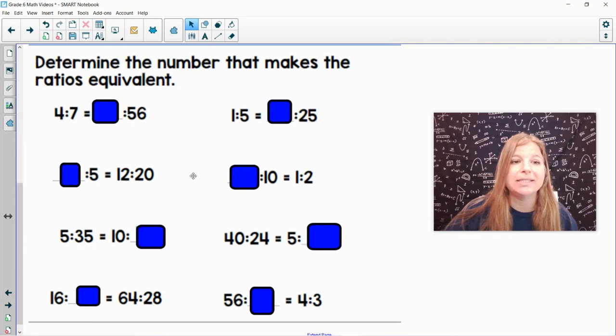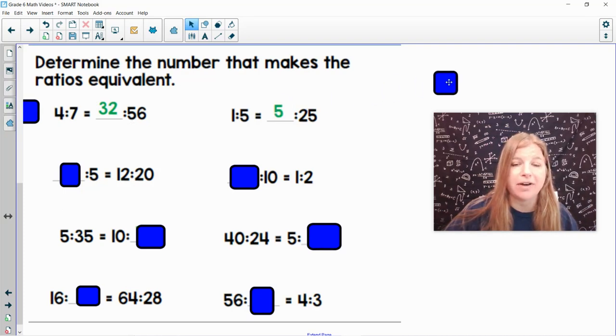Here's some more practice. 4 to 7 equals what to 56? 7 times 8 is 56. So 4 times 8 is 32. 1 to 5 is equal to blank to 25. 5 times 5 is 25. So 1 times 5 is 5.